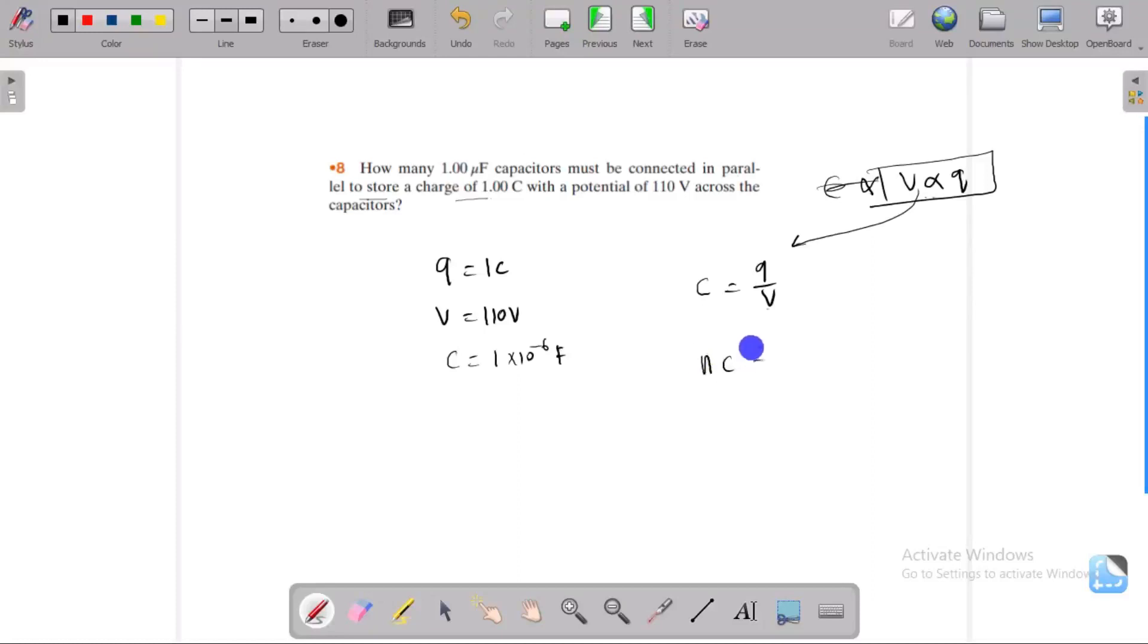So n into c equals q by v, which means n equals q by cv. Q has value one coulomb, c has value 1×10^-6 farads, and voltage is 110 volts.